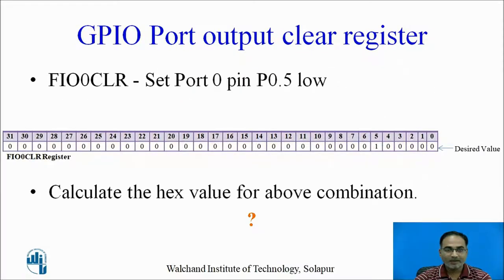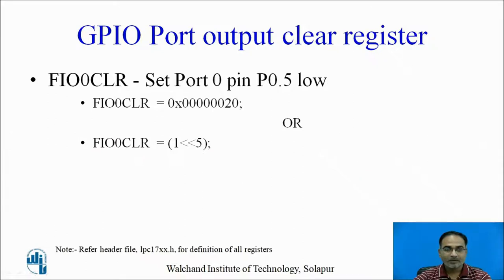Here is an example where P0.5 is forced to logic low. In this 32-bit format, we are interested in port pin P0.5 and want to force it low, so we write 1 at that bit position. The statement will look like: FastIO 0 clear register = 0x00000020, or equivalently 1 left-shifted by 5 bits. These lines force logic low on port 0 pin P0.5.